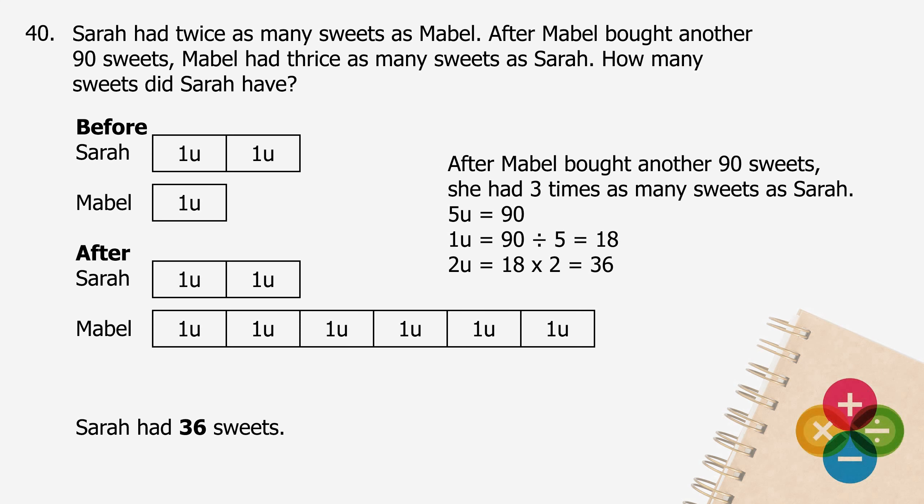Question 40: How many sweets did Sarah have? She had three times as many sweets, and another 90 sweets. Five units is equal to 90. One unit will be 90 divided by 5, and the quotient is 18. Two units will be 18 multiplied by 2, and the product is 36. Sarah had 36 sweets.